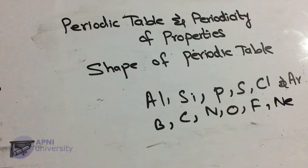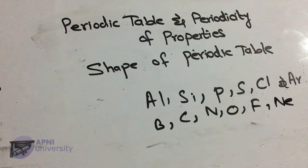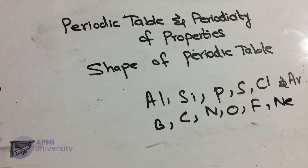Sodium ka valence electron third shell M shell mein aata hai, aur uska valence electron 3s sub-shell mein present hai — electronic configuration lithium jaise similar hai. Magnesium ka valence shell electronic configuration beryllium ke according hai, 2s². Similarly, next six elements — boron, carbon, nitrogen, oxygen, fluorine, neon — ke according valence shell electronic configuration aayegi, aur unke corresponding elements periodic table mein same group mein honge.